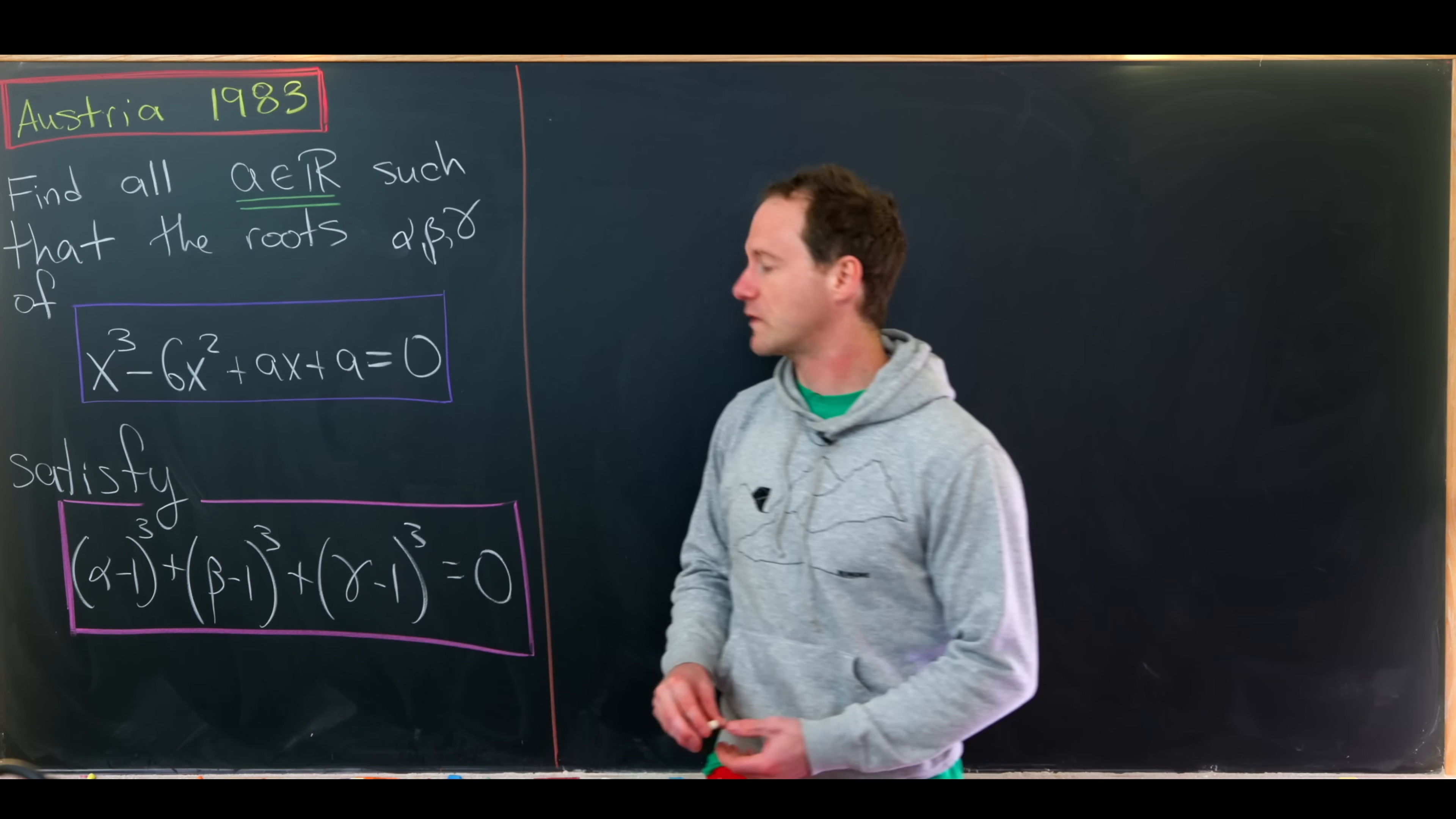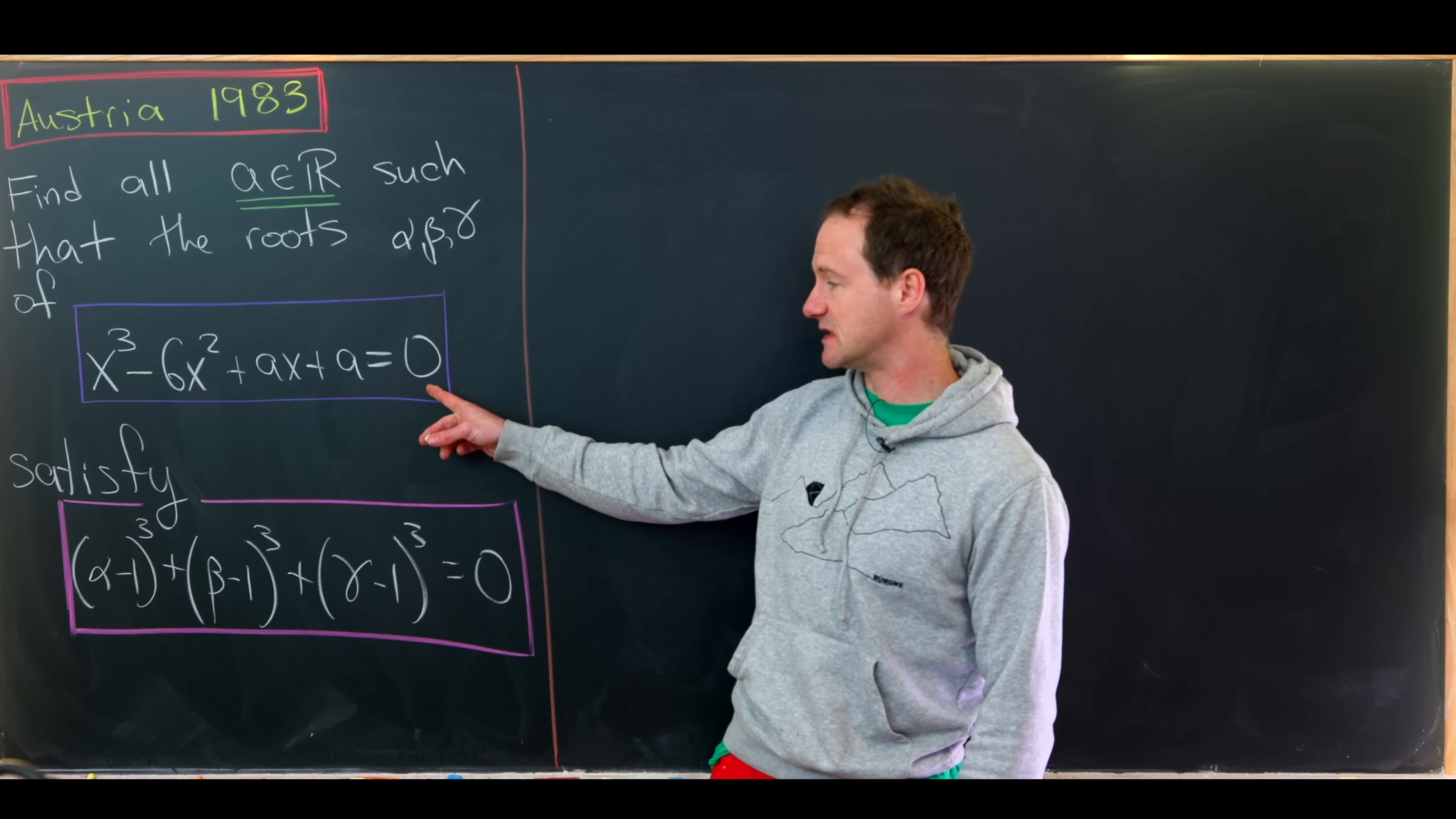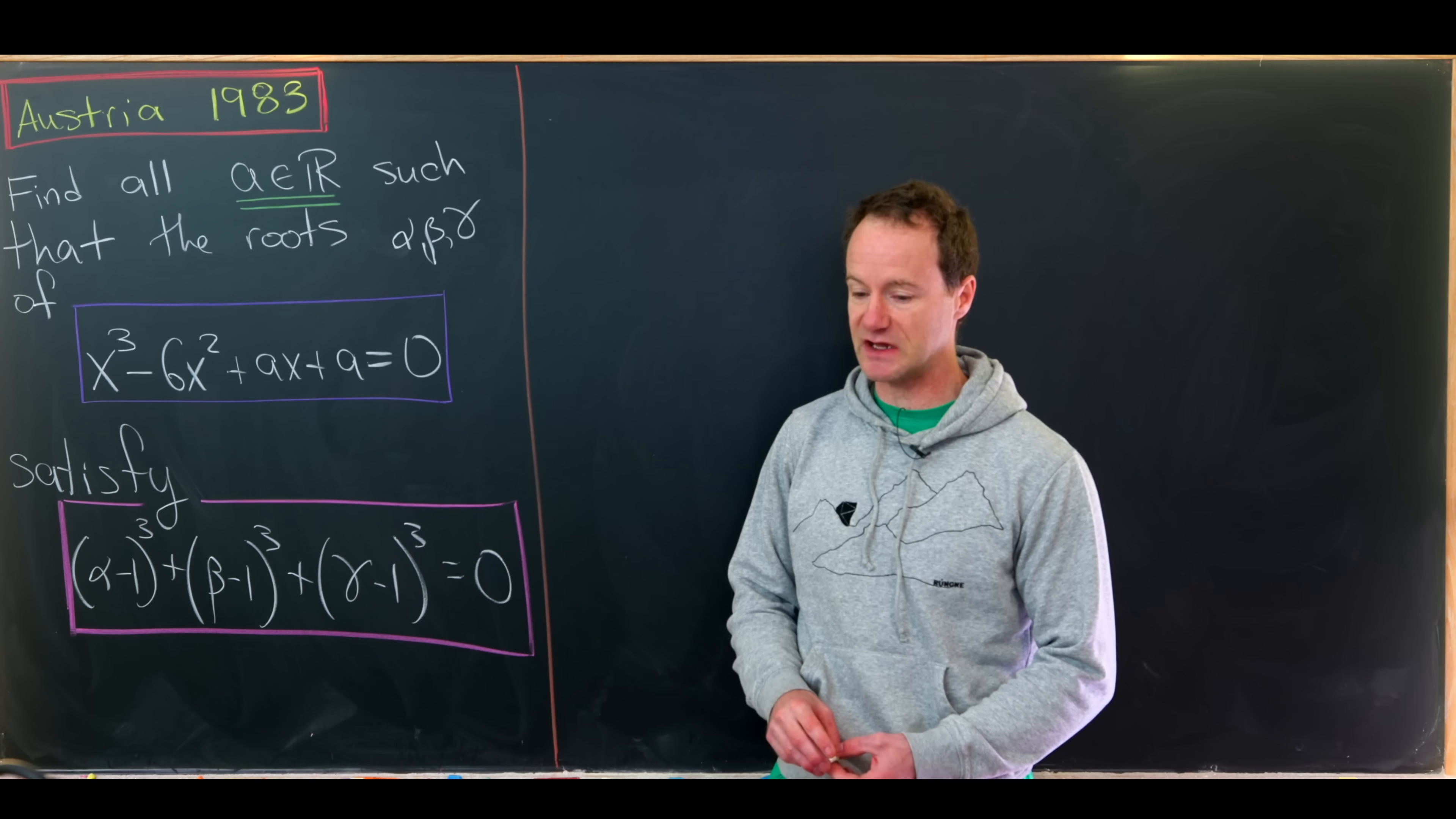We'd like to find all real numbers a so that the roots alpha, beta, gamma of the following cubic polynomial x cubed minus 6x squared plus ax plus a equals 0 satisfy the following cubic equation in the roots: alpha minus 1 cubed plus beta minus 1 cubed plus gamma minus 1 cubed equals 0.